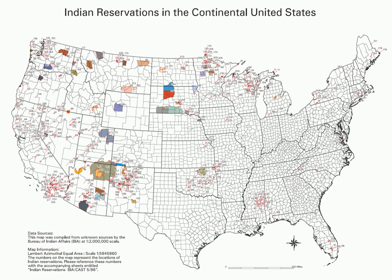Reservations are unevenly distributed throughout the country. The majority are west of the Mississippi River and occupy lands that were first reserved by treaty or granted from the public domain. Because tribes possess the concept of tribal sovereignty, even though it is limited, laws on tribal lands vary from those of the surrounding area. These laws can permit legal casinos on reservations, which attract tourists. The tribal council, not the local government or the United States federal government, often has jurisdiction over reservations.